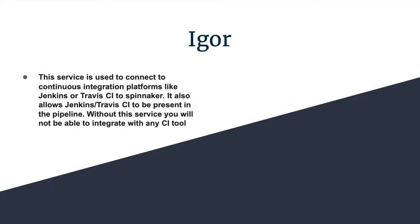IGOR. This service is used to connect continuous integration platforms like Jenkins to Spinnaker. It also allows for CI to be present in the pipeline. Without this service, you will not be able to integrate with any CI tools.